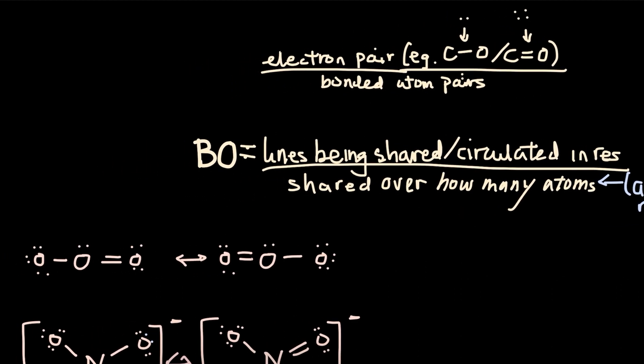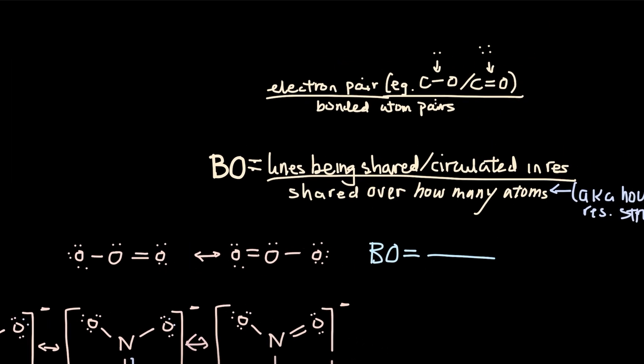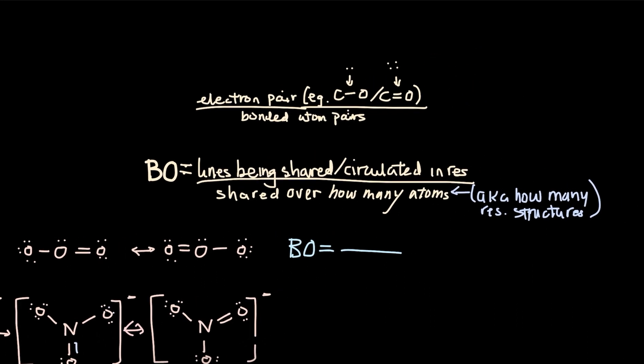So to illustrate this more simply, starting with our first example, which is ozone, O3. Bond order. First of all, how many resonance structures are there? There are two resonance structures for ozone.